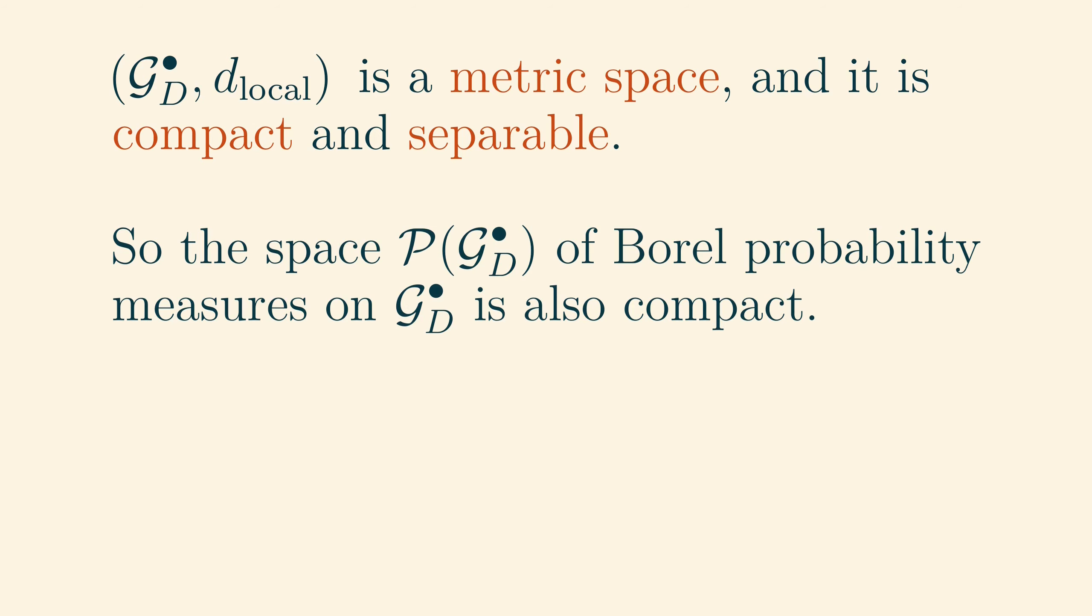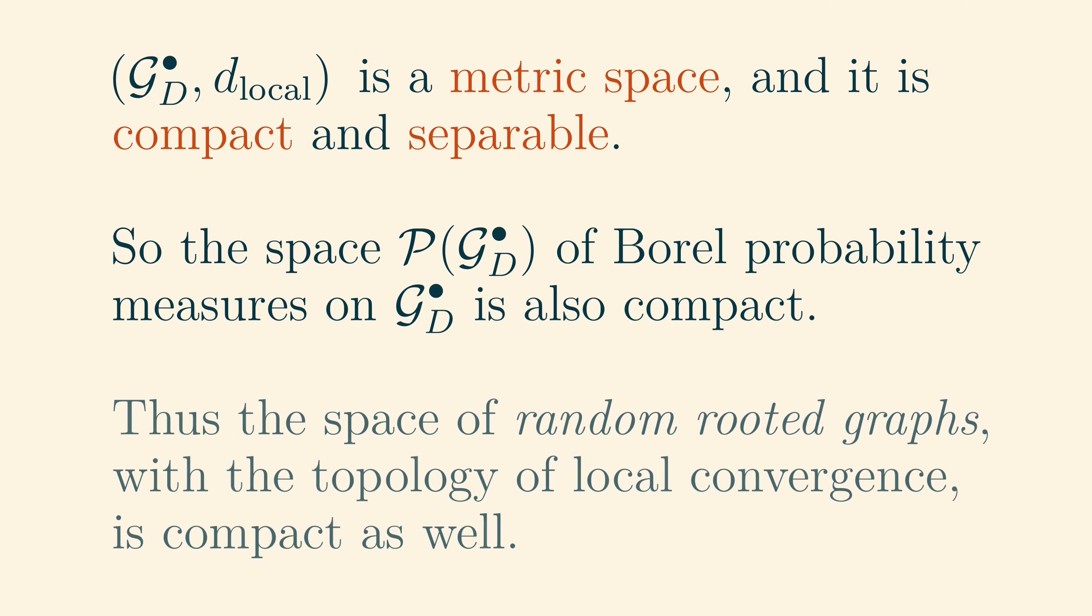In any case, Prokhorov's theorem now implies that the space of Borel probability measures on gd dot is compact with respect to the weak convergence topology. And since probability measures on gd dot are the same thing as random rooted graphs, this means that the space of random rooted graphs with the topology of local convergence, which we have defined, is also compact.